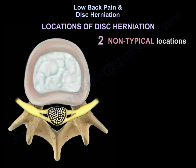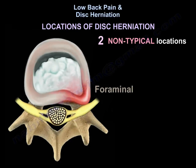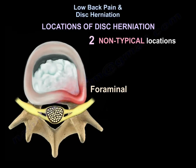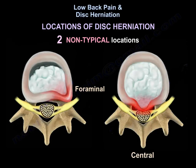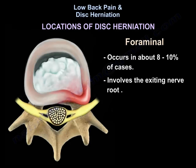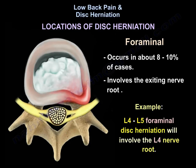The two uncommon and atypical locations are foraminal and central disc herniation. The foraminal type occurs in about 8 to 10 percent of cases and involves the exiting nerve root. For example, the L4-L5 foraminal disc herniation will involve the L4 nerve root, and the L5-S1 foraminal disc herniation will involve the L5 nerve root.